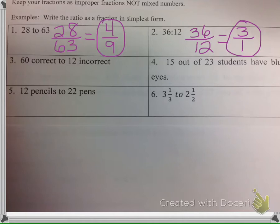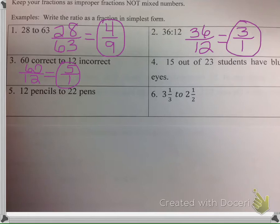Number 3: you have 60 correct to 12 incorrect. That would be 60 over 12. 12 goes into both of them — 12 goes into 60 five times, and 12 goes into 12 one time, so that's 5 over 1. Always simplify. Number 4: 15 out of 23 students have blue eyes. You would write that as 15 over 23, and that's already simplified, so you would just leave that.